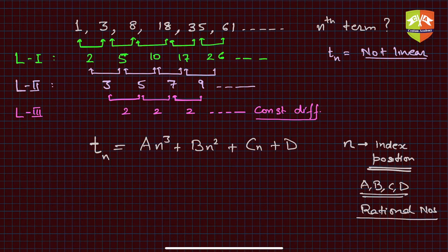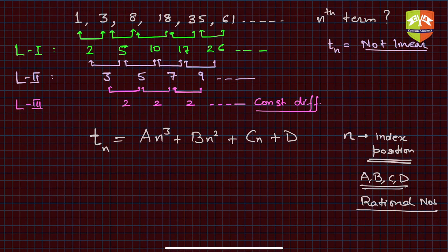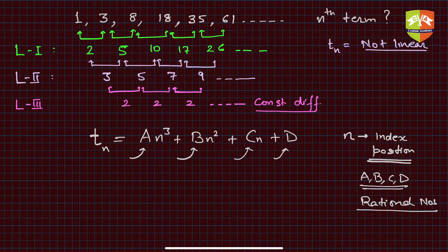We are not going to discuss the proof of why this is the case in this session — we are only going to discuss the implementation. Given such a sequence, can we find a, b, c, and d so that we can get the nth term expression? Let's do the same exercise as last time. For n = 1, the sequence value is 1, and from the formula we get a + b + c + d.